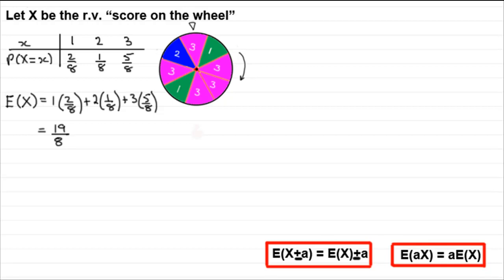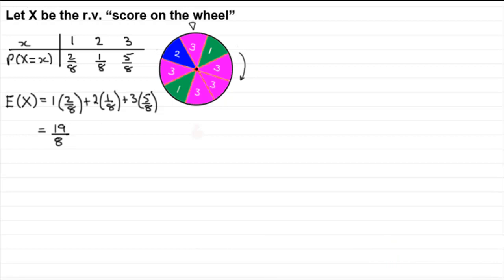Now, let's suppose we take our spinner that you should be fairly familiar with from previous tutorials. We have our spinner here with the scores 1, 2, and 3 on. We've got a probability distribution table here for the discrete random variable X, which is the score on the wheel, and we've got our probabilities listed underneath the scores. Do you remember we worked out E of X, the expected mean, by doing the observed value times the probability, plus the next observed value times probability, and then finally 3 times the 5 eighths, doing the sum of those. And that gives us E of X, the expected mean.